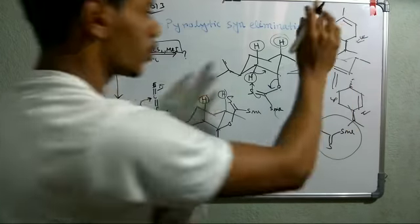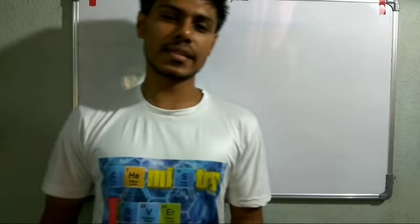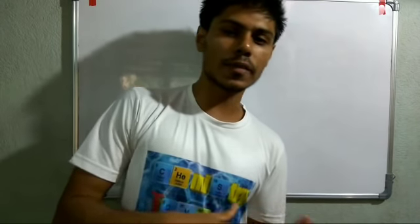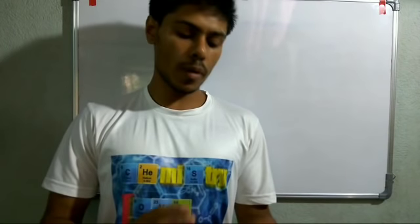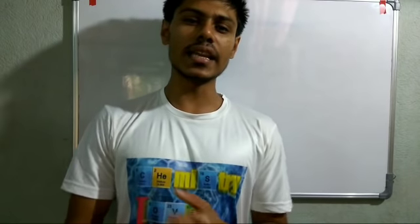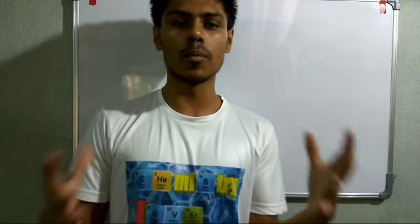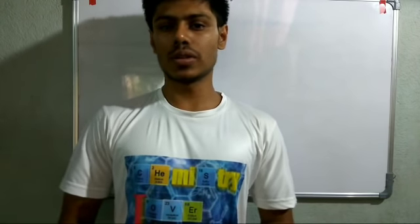In this case, the major product will be the one where the double bond is more substituted, because the thermodynamic factor is more important. So the rule is: when doing any pyrolytic syn elimination, first find where the syn hydrogen is available. If two syn hydrogens are available, decide which gives the more substituted product. That will be the major product.